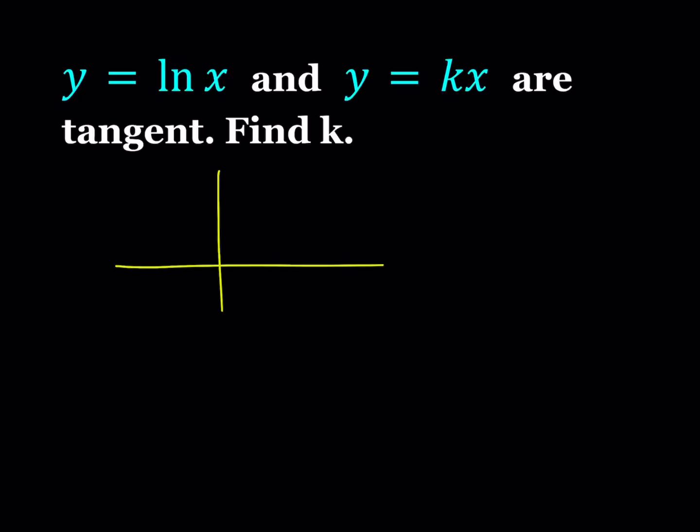We have the y equals ln x that looks like this, and then we have y equals kx which obviously goes through the origin, and these two graphs are tangent to each other. So let's go ahead and mark the point of tangency and call this a.